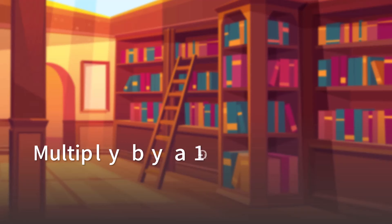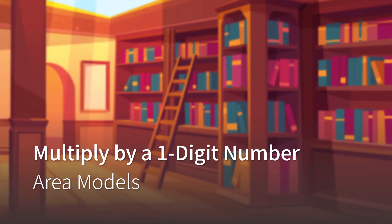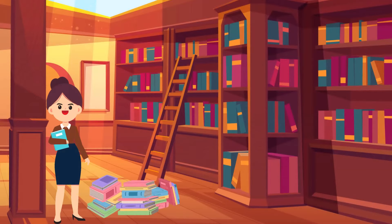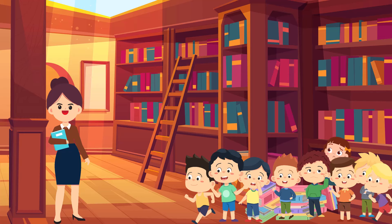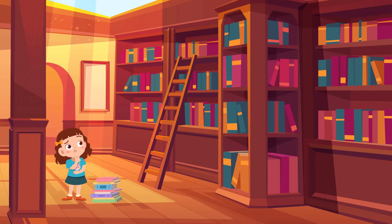Multiply by a one-digit number using area models. This summer break came as the school decided to refurnish the library. Miss Smith, the head of the library, decided to give all the books to students. Abigail was also given a book.